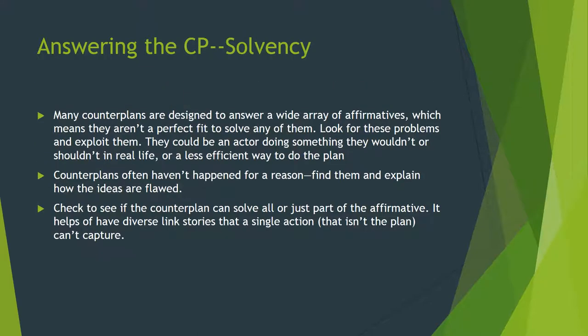First, let's talk about the S — solvency. Many counter plans are designed to answer a wide array of affirmatives, which means they aren't a perfect fit to actually solve any of them. Look for these problems and exploit them. They could be using an actor that doesn't do that in real life, or a less efficient way to do the plan. Counter plans often haven't happened in real life for a reason — identify those and explain how their solvency is flawed. Check to see if the counter plan can solve all or just parts of the affirmative. It helps to have a diverse link story so that the counter plan can't solve all of your advantages.